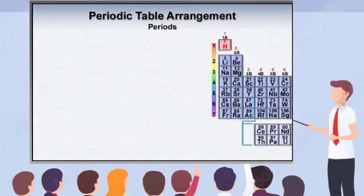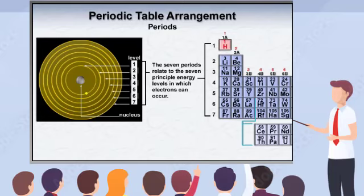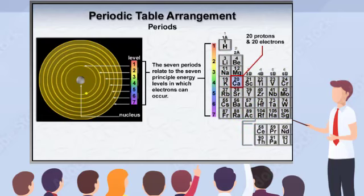There are seven horizontal rows, called periods, in the periodic table. Each period relates to one of seven distinct energy levels in which electrons exist. In other words, each period represents the start of a new energy level that is being successively filled with electrons. As the atomic number increases by one moving from left to right, each element has one more proton and thus one more electron than the element it follows.